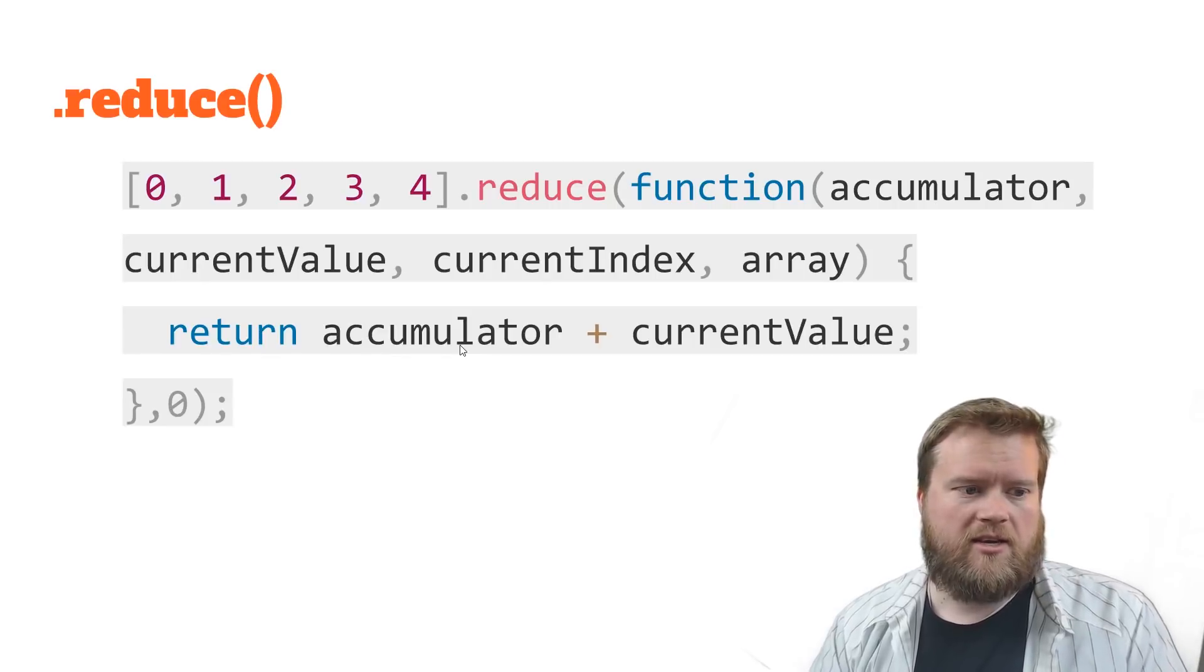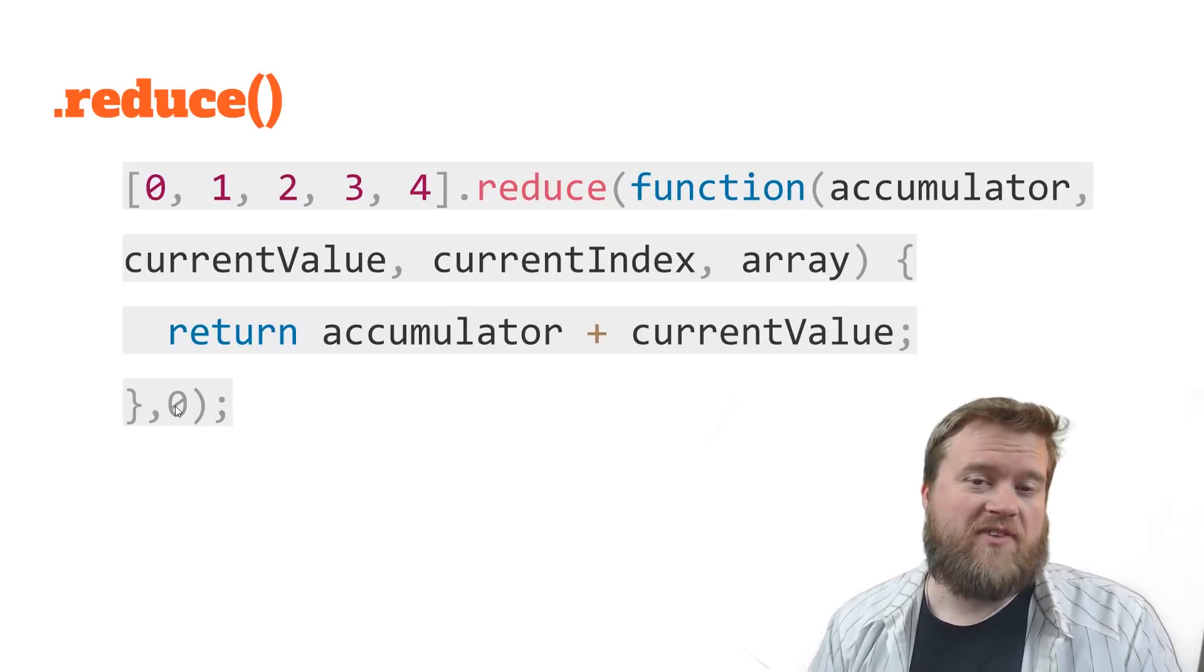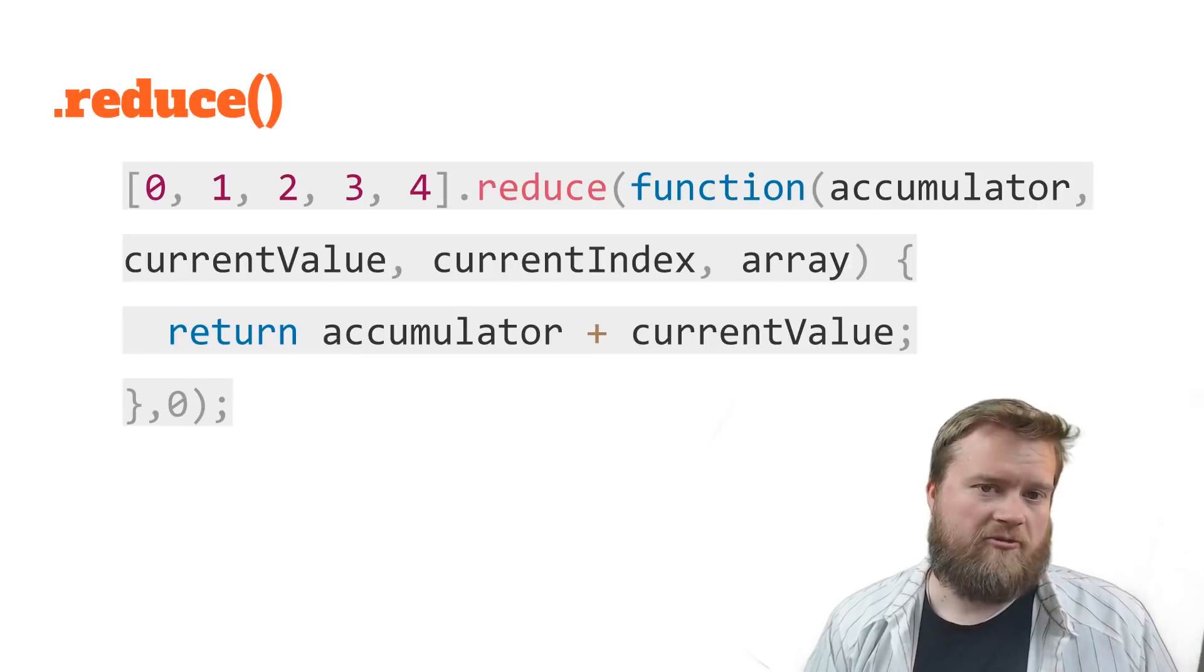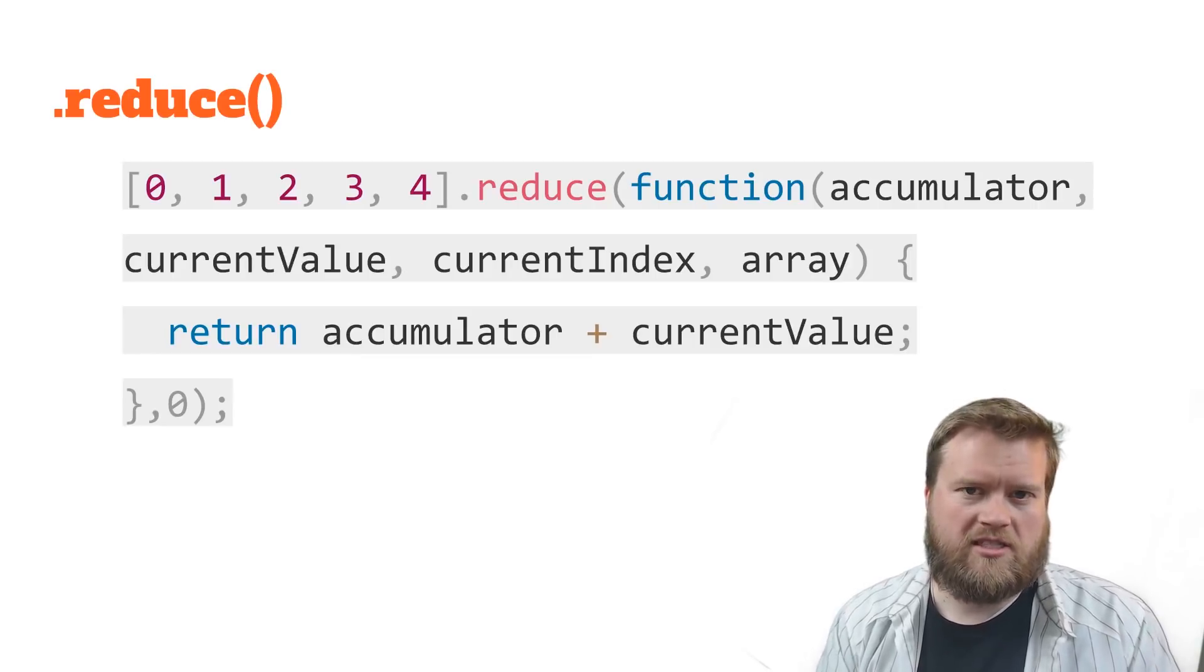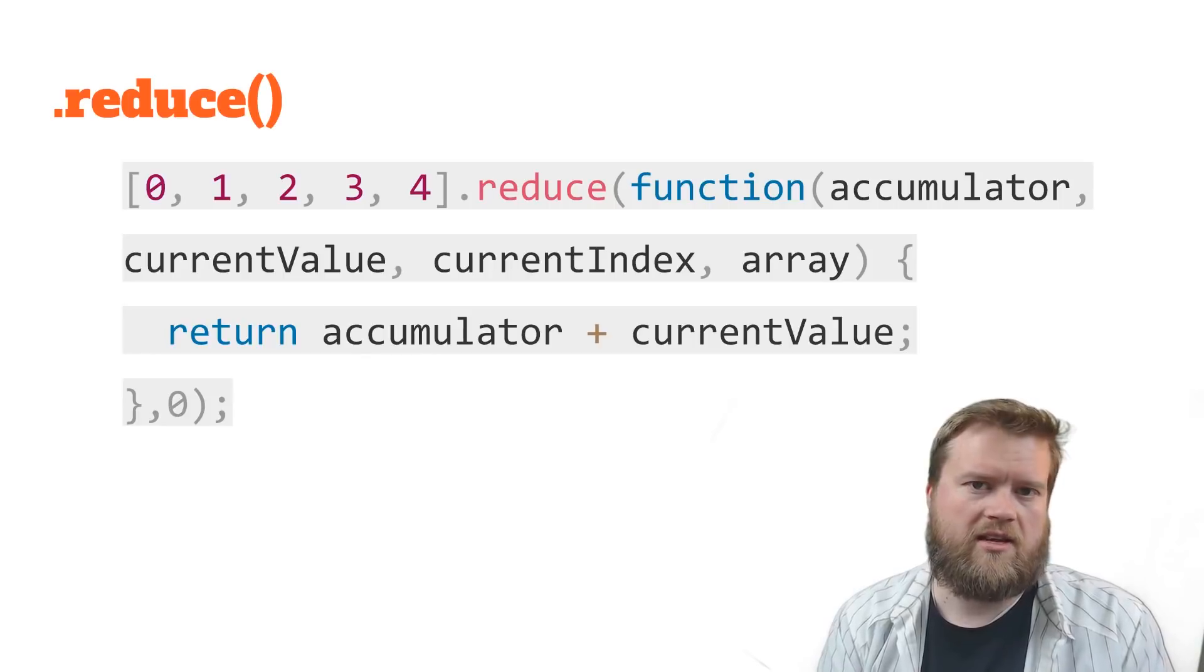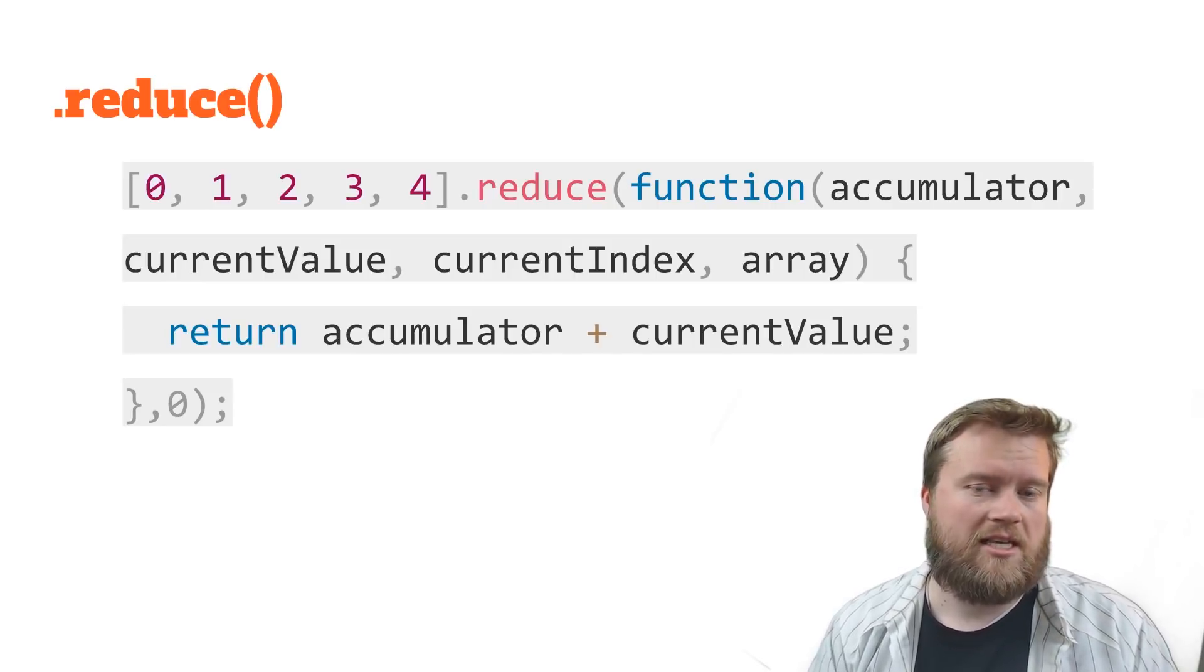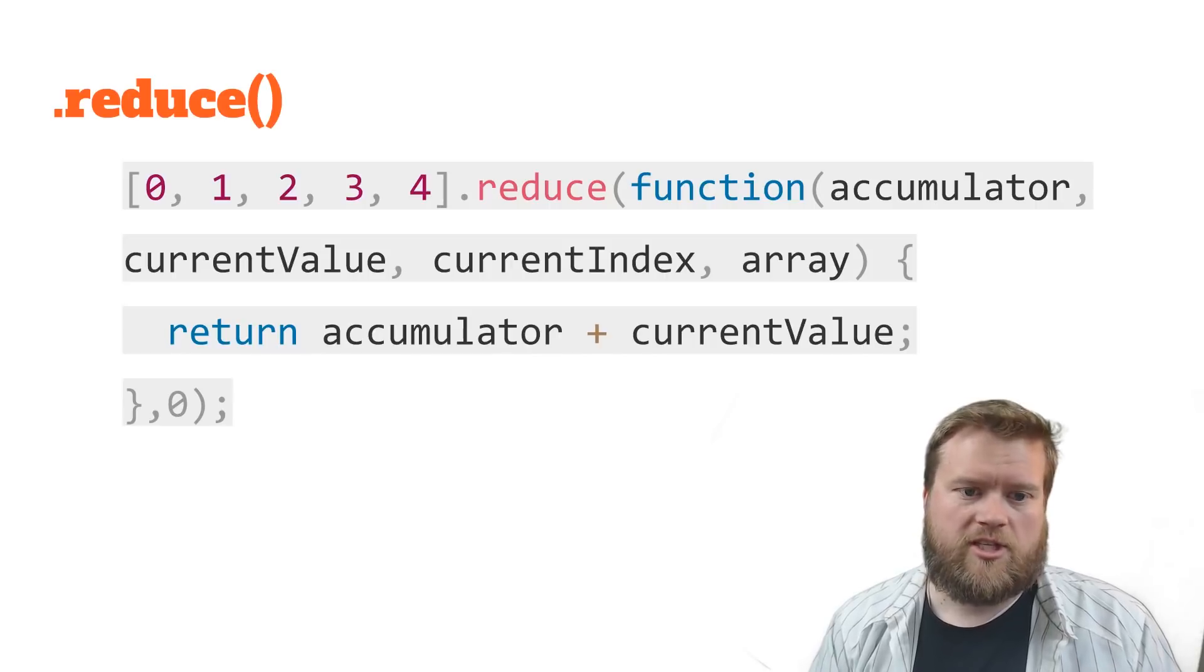But you can see down here with my mouse, that you can actually set an initial value. So you can have this be an object. You can have it set an initial value of 100. So you can do a lot of cool things. So this usually reduces down to one thing, either an object, an array, or just a number. So you're reducing it down to one. And once again, of course, we're not changing things inside the array that was passed to it. We're always returning a new array or object.